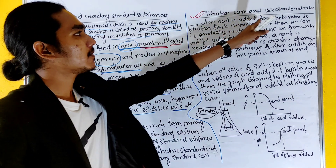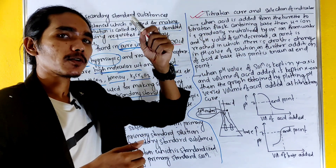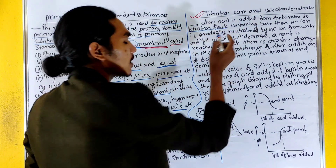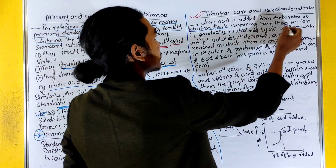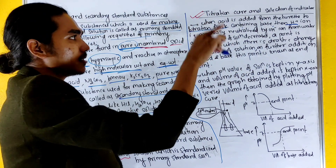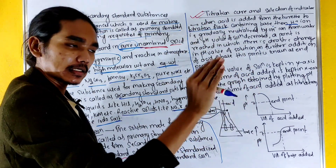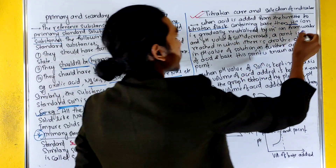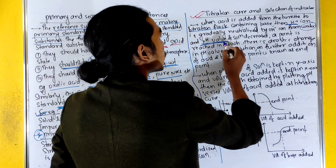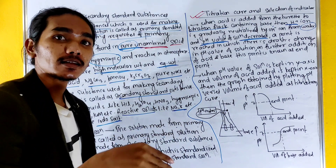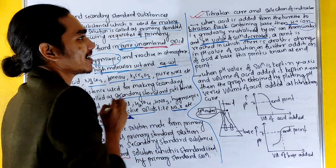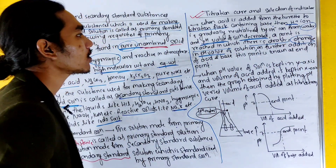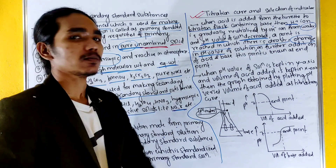For titration curves and selection of indicators: when acid is added to a base or base to an acid, H⁺ from acid and OH⁻ from base neutralize each other, forming water. The pH value of the solution decreases as neutralization proceeds. A point is reached where there is a drastic change in pH on further addition of acid or base — this point is known as the end point.